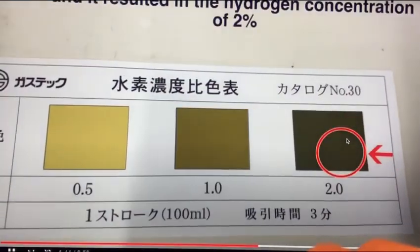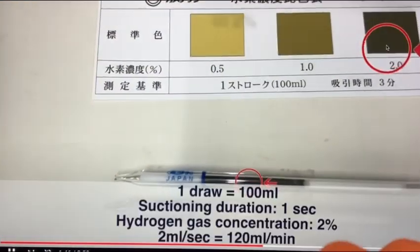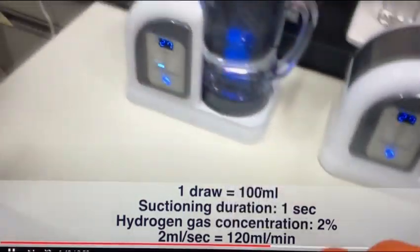And so you can see the color which comes out to a 2% concentration and it came out to 120 milliliters per minute.